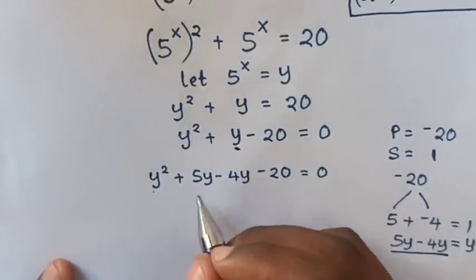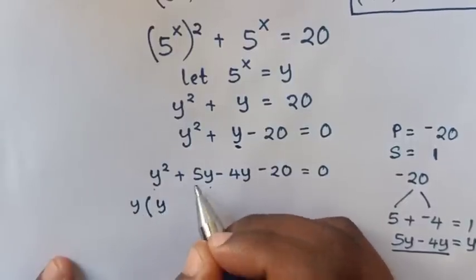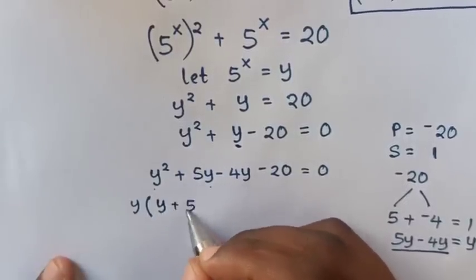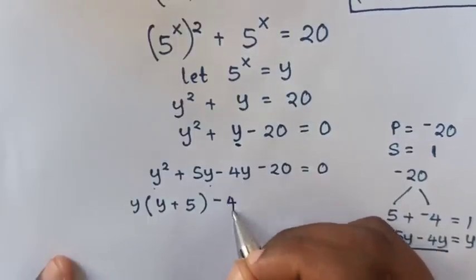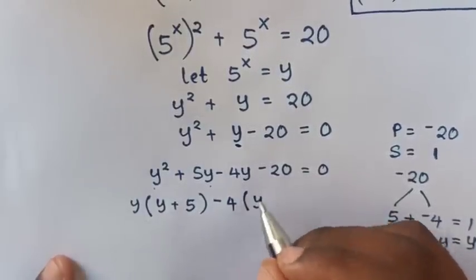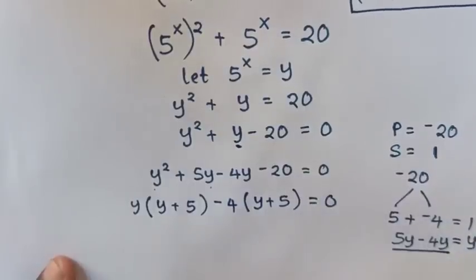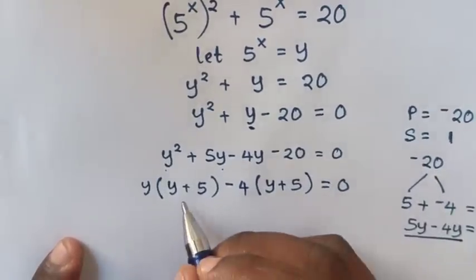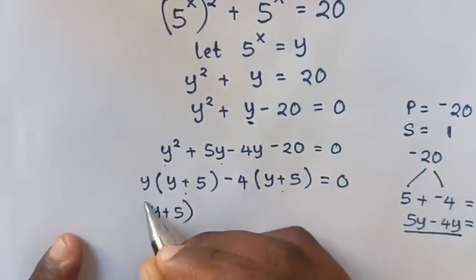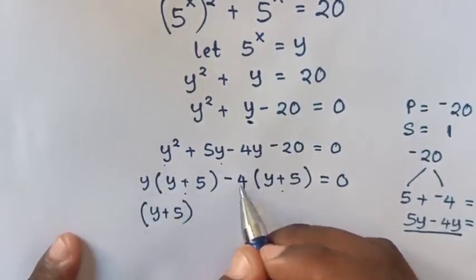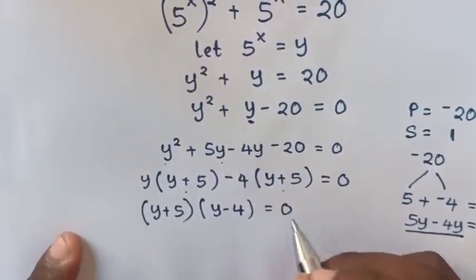Next, y is common in the first two terms, so we take y out of the bracket — y divided by y is y, and 5y divided by y is plus 5. For the last two terms, negative 4 is common, so we take negative 4 out — giving negative 4 times bracket y plus 5, is equal to 0. Then y plus 5 is common, so we take y plus 5 out of the bracket, giving bracket y plus 5 times bracket y minus 4 equals 0.